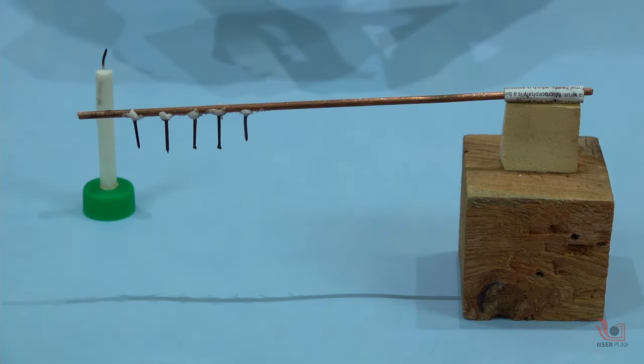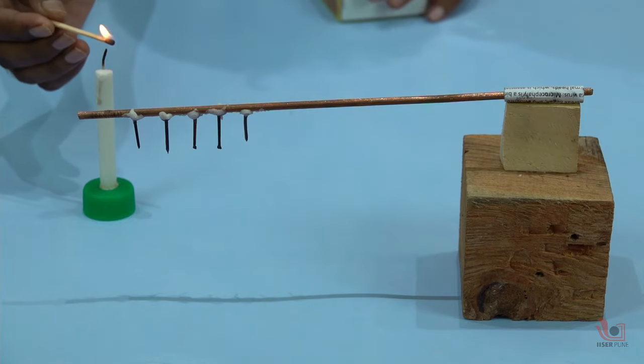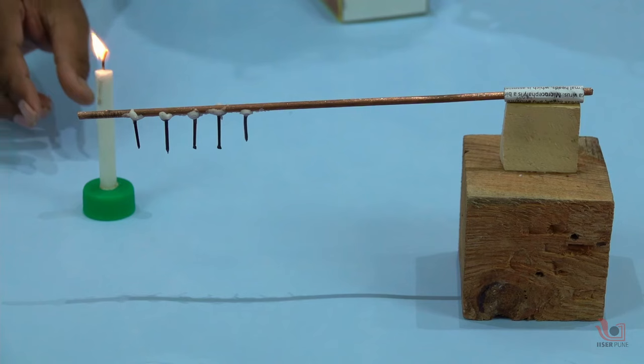Adjust the height of the candle according to the height of the wooden stand. Light the candle and place it under one end of the copper rod so that this end will get heat from the candle flame.